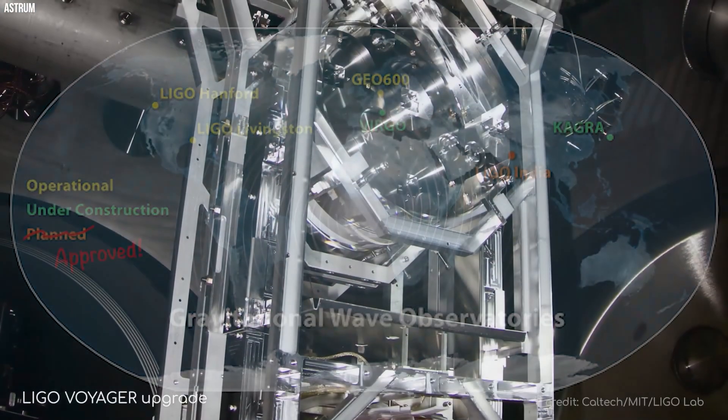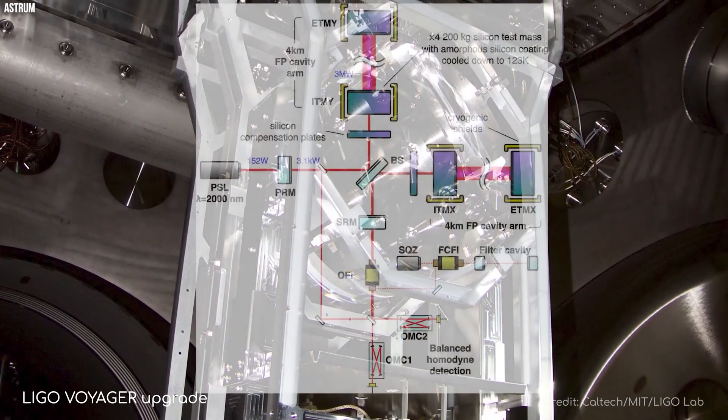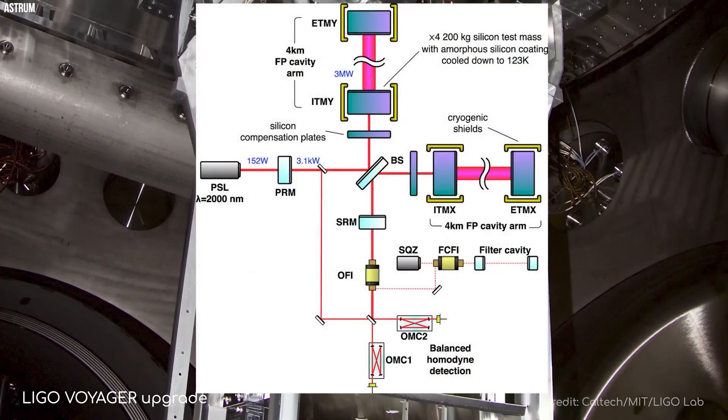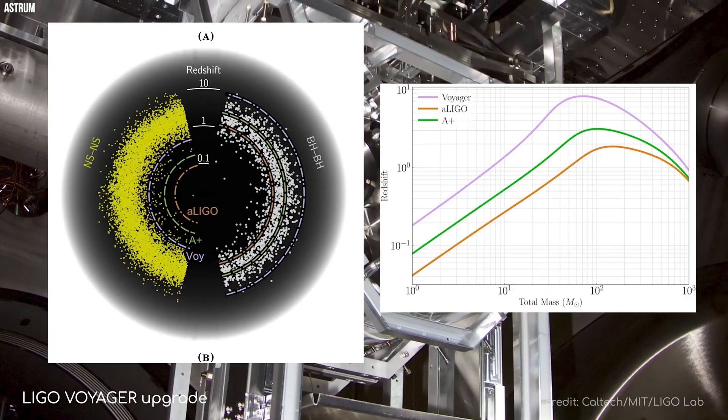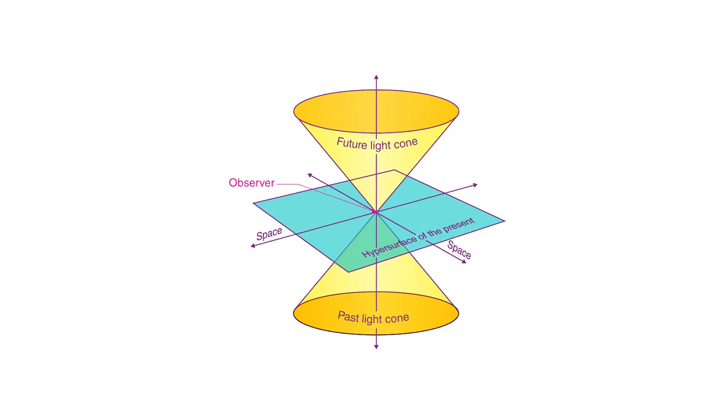Some scientists have even proposed that gravitational waves can enable faster-than-light travel, but currently accepted scientific understanding prohibits objects with mass from reaching or exceeding the speed of light in a vacuum, as postulated by Einstein's theory of relativity.